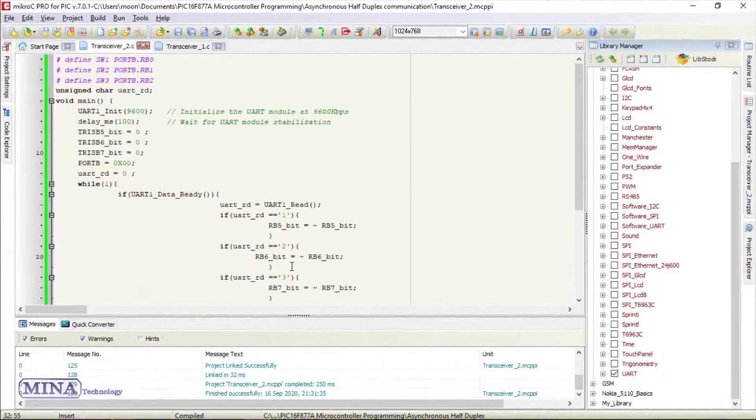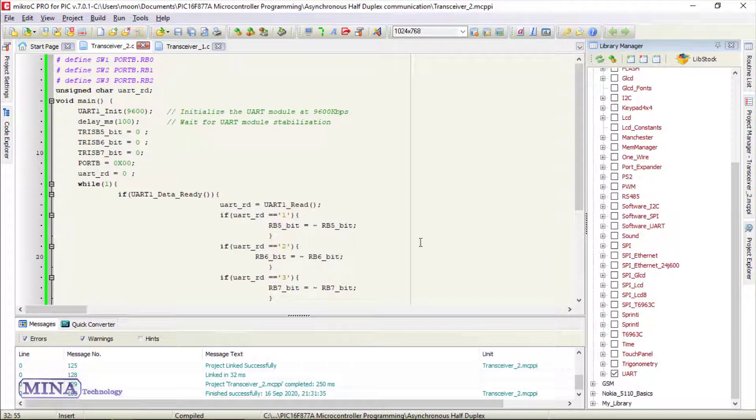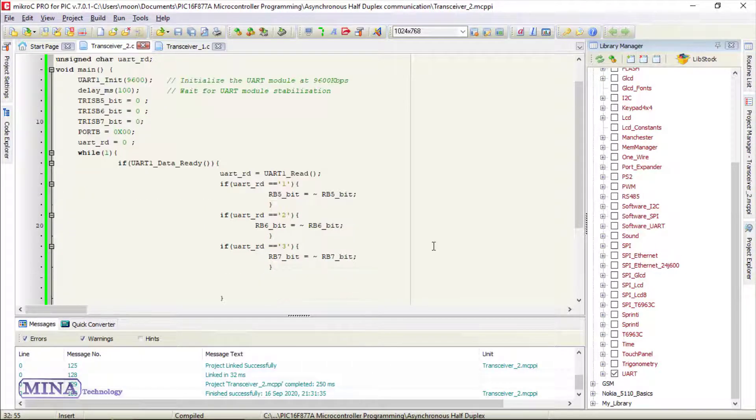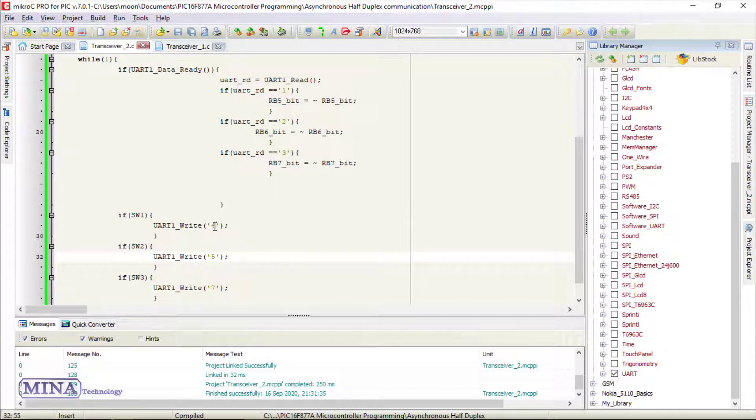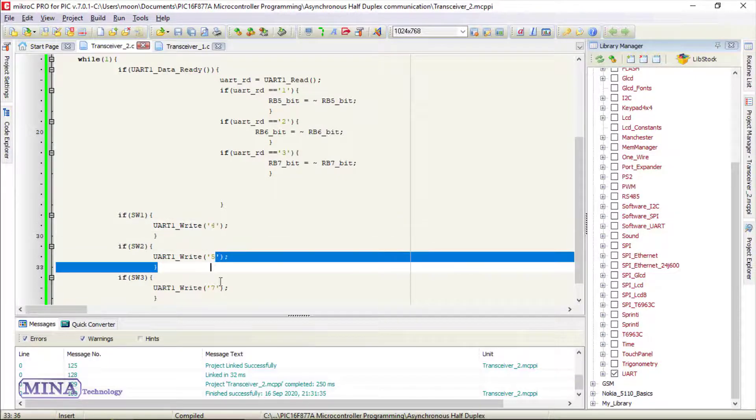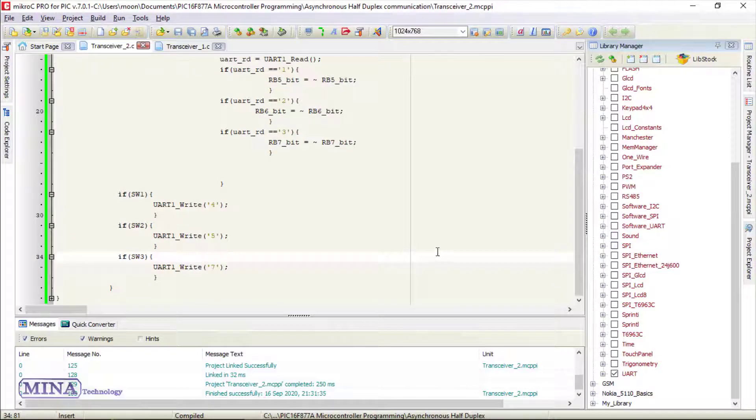Here's the MikroC code for the second microcontroller. We have made some changes in our previous code. Here, we have changed this digit. Now, we will upload the code and we will see the practical example.